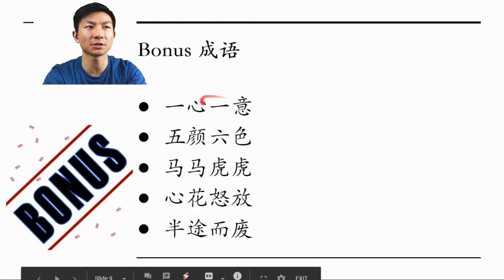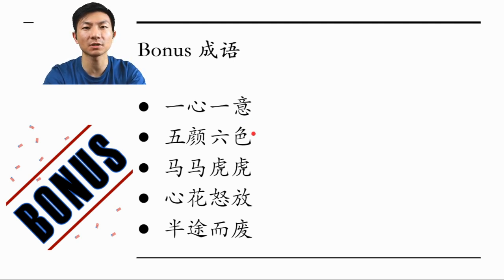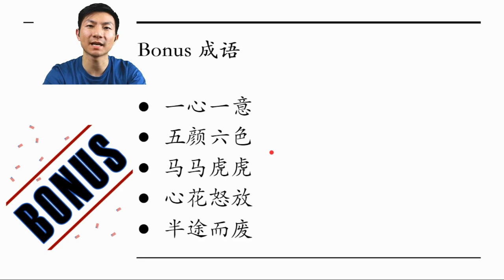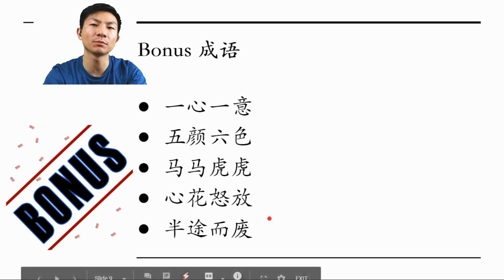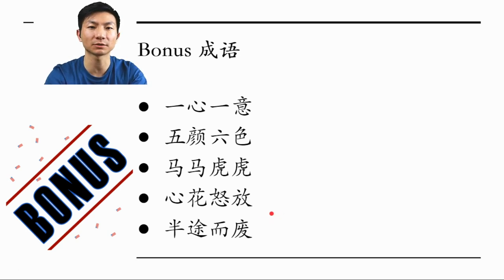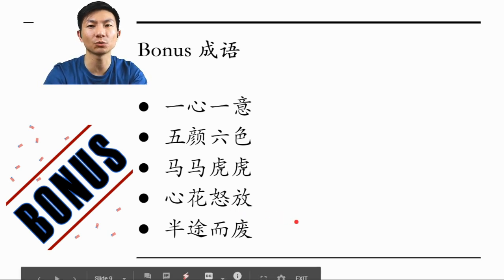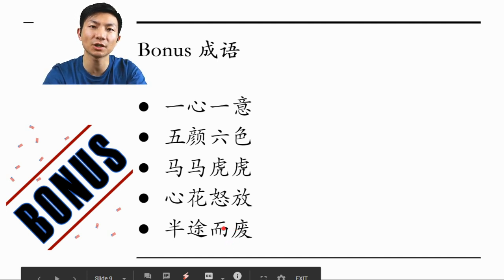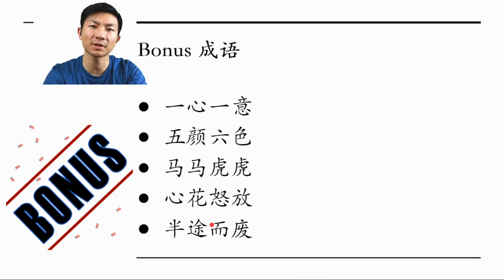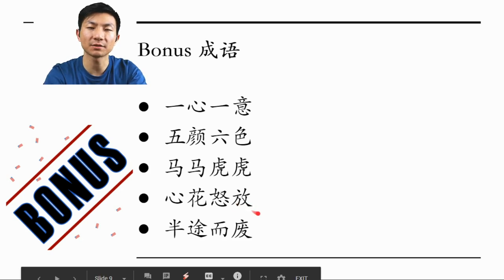一心一意 means doing something very focused — it can be used as an adverb: 他在一心一意地看书. 五眼六色 is an adjective to describe something colorful. 马马虎虎 — that should be something everybody knows. 心花怒放 is used to describe someone who's very happy — after doing something positive, you feel achieved: 我觉得心花怒放. And the last one, 半途而费, is used as a verb phrase, usually in negation: 你不能这样半途而费. For example: 虽然很难，但是我觉得不应该半途而费，所以我要坚持下去.